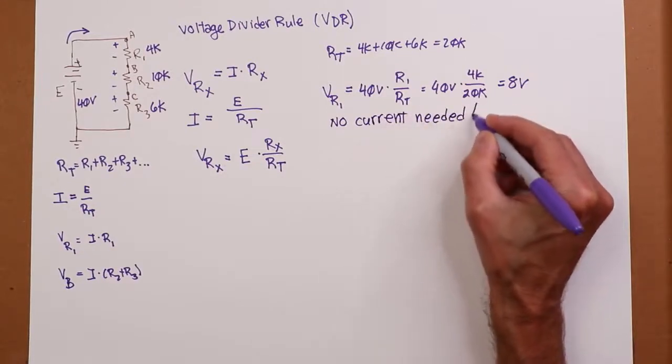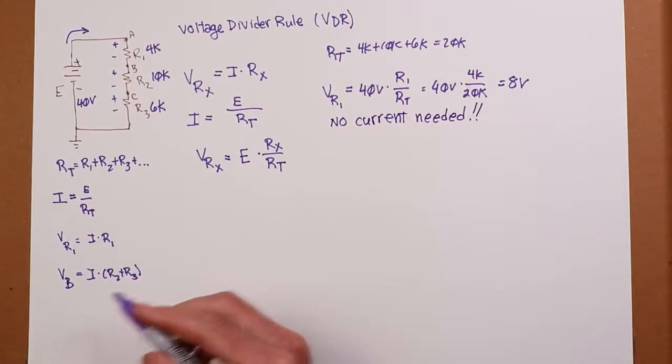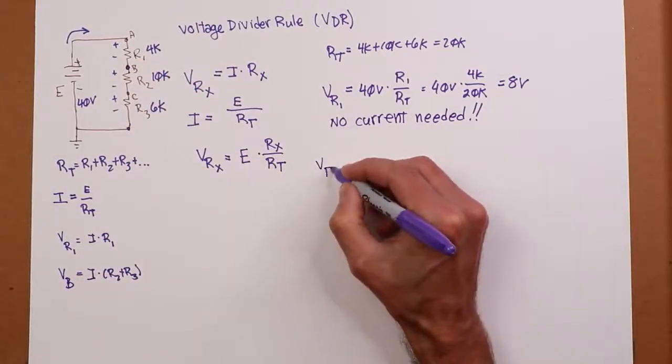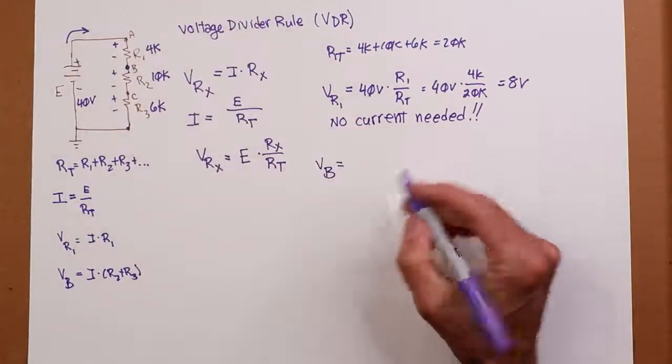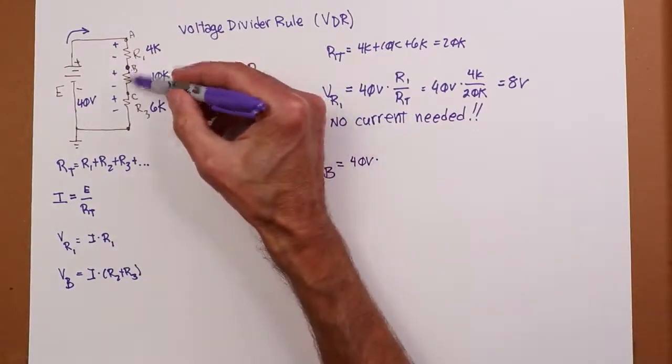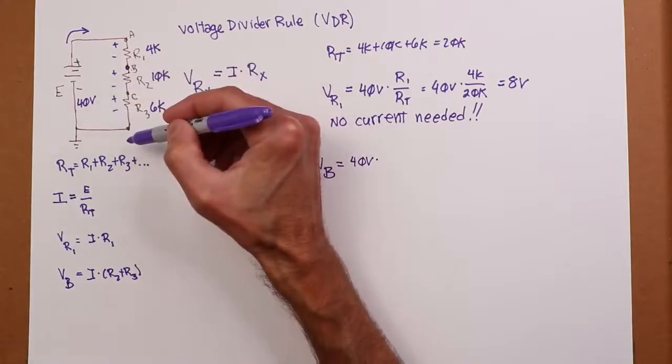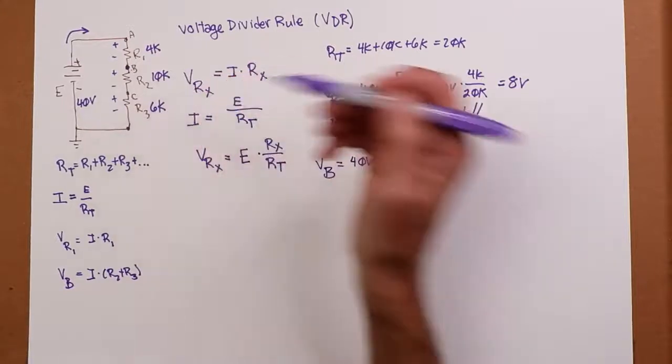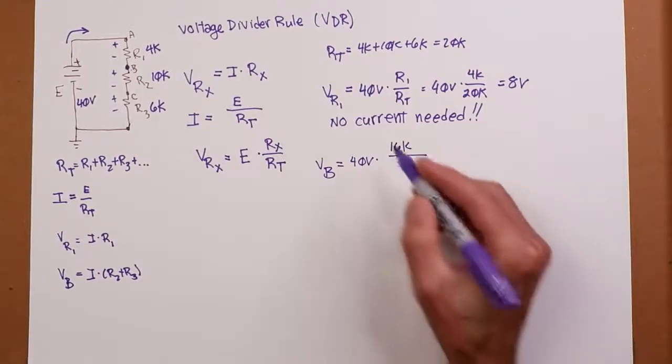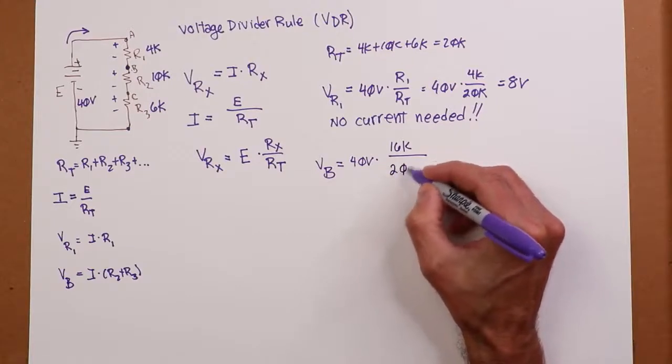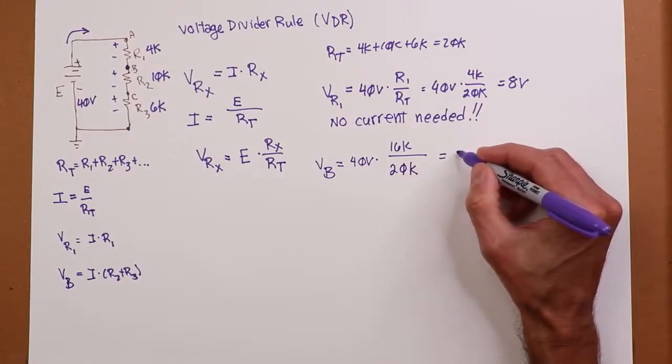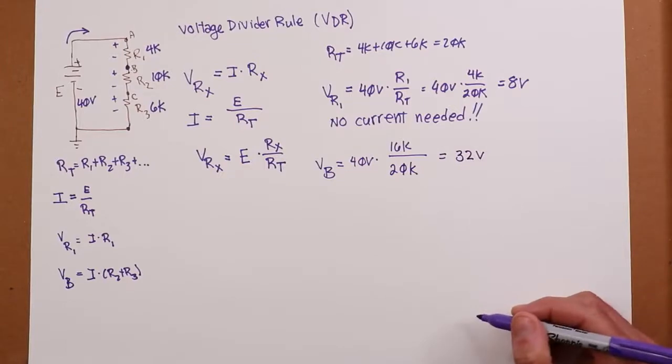Now suppose I want to find something a little different, like I want to find VB, the voltage from here to here. We do the same thing. What's the total applied voltage to this string? 40 volts. What's the resistance I'm interested in? I want to find the voltage from B to ground. So what's the resistance from B to ground? Go from B to ground. What do you see? A 10 and a 6. So that's 16k, and then divide that by the total resistance, the 20k. So you run through that and you wind up with 32 volts. That simple.